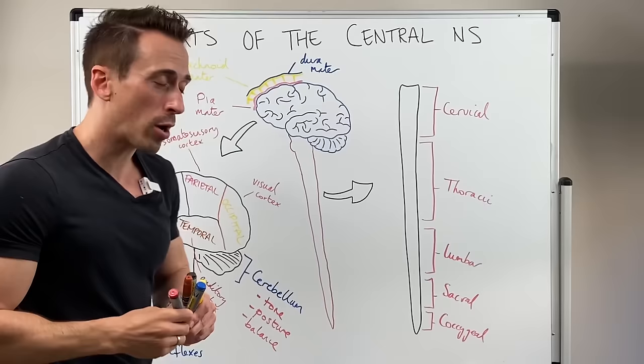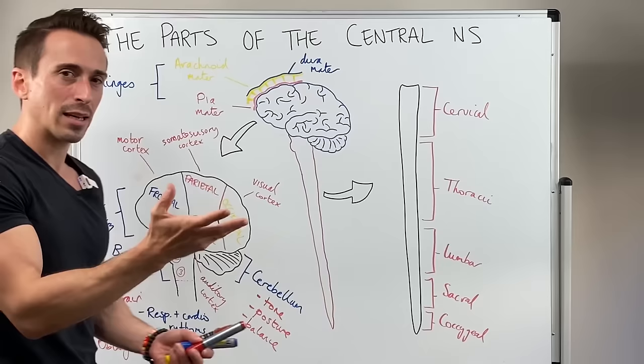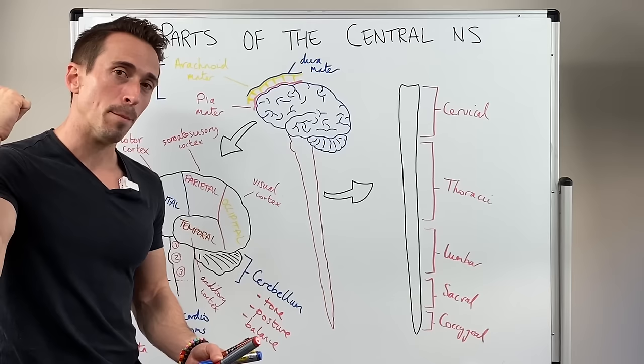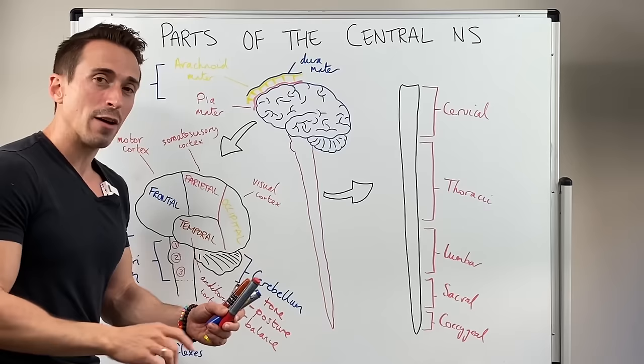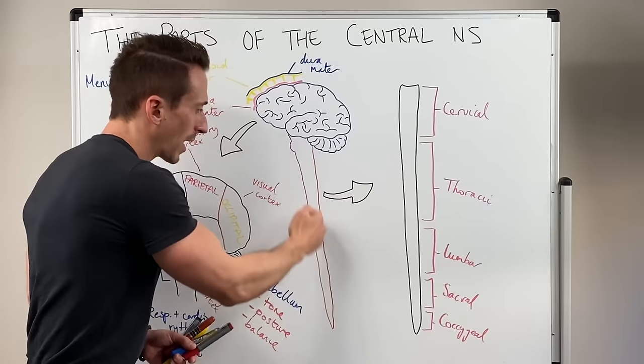Now, the spinal cord also plays an important role for reflexes as well. Now, a reflex, like I said, it bypasses going to the conscious area, so the cortices of the brain. And it can be something where I touch a hot plate and my arm reflexively moves back, for example. Or if I'm walking and I step on some glass, it allows for that leg to move back and for the other leg to plant. So these reflexes actually occur at the spinal cord itself.